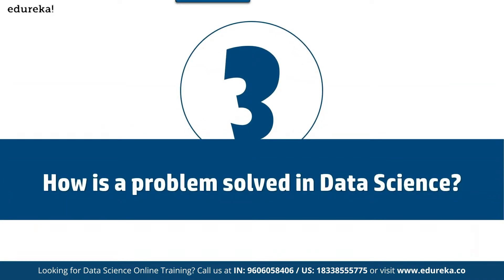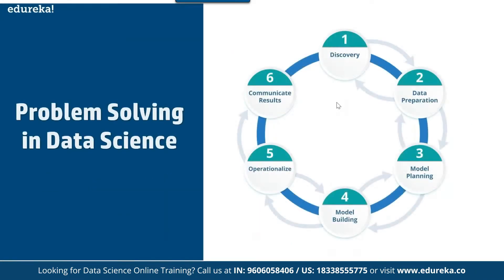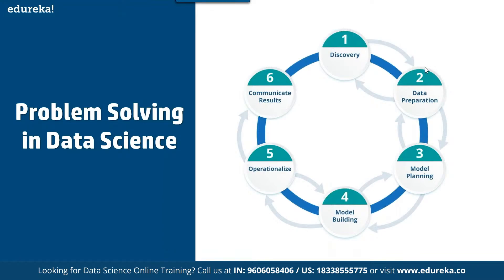Now let's talk about how a problem is solved in data science and get a clear understanding. The problem-solving in data science has an entire lifecycle consisting of six steps: discovery, data preparation, model planning, model building, operationalize, and communicating results. Every phase in itself is a different world.